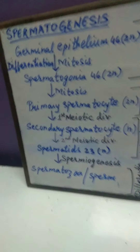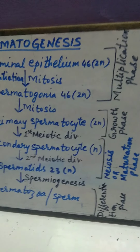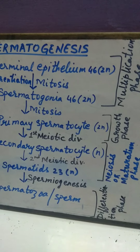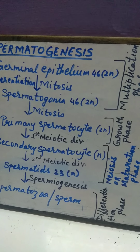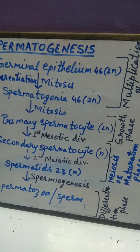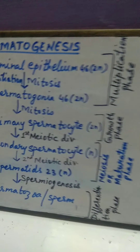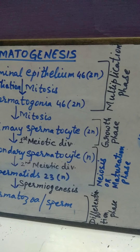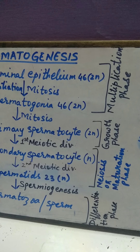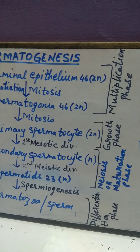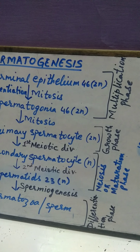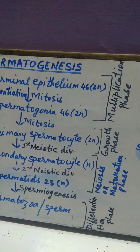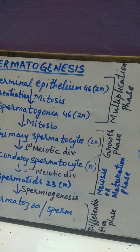What is gametogenesis? It is the production of gametes for sexual reproduction, which takes place in germ cells present in the primary sex organ. The primary sex organ means testes in male and ovaries in female.